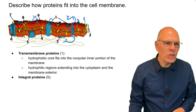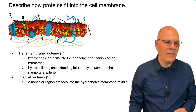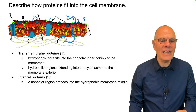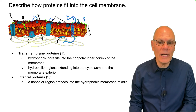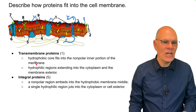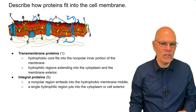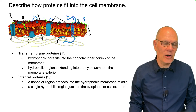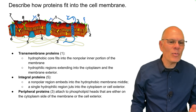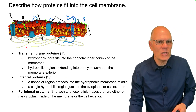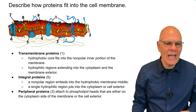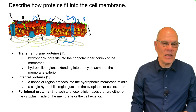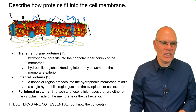There are integral proteins, such as the one at position five. These proteins have a nonpolar region that extends into the hydrophobic membrane middle and a single hydrophilic region that juts into the cytoplasm or into the cell exterior. And then finally, you have peripheral proteins, like the one shown at three. They attach to phospholipid heads that are either on the cytoplasmic side of the membrane or in the cell exterior.